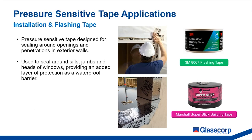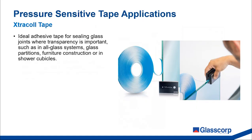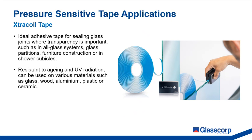Installation and flashing tapes are pressure sensitive tapes designed for sealing around openings and penetrations in exterior walls. They're used to seal around sills, jambs, and heads of windows, providing an added layer of protection as a waterproof barrier. We supply two types of installation flashing tape: the 3M 8067 Flashing Tape and the Marshall Superstick Building Tape. As a key supplier of glazing and construction sealants, we've had both flashing tapes tested for compatibility and adhesion with relevant sealant products in our range. For sealing glass joints where transparency is important — such as in all-glass systems, glass partitions, furniture construction, or shower cubicles — we have a specific product called Extracol tape, formerly known as Duplicole tape. This tape is resistant to aging and UV radiation and can be used on various materials in addition to glass, such as timber, aluminium, plastic, and ceramic.